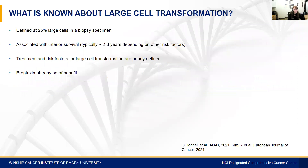What is known about large cell transformation? Large cell transformation is typically a pathologic diagnosis defined as greater than 25% involvement of large cells in the biopsy specimen. This is associated with inferior survival of typically two to three years depending on other risk factors. Unfortunately, treatment and risk factors for large cell transformation are very poorly defined, with case series including only 10 to 30 patients, with some noting that brentuximab may be of benefit.